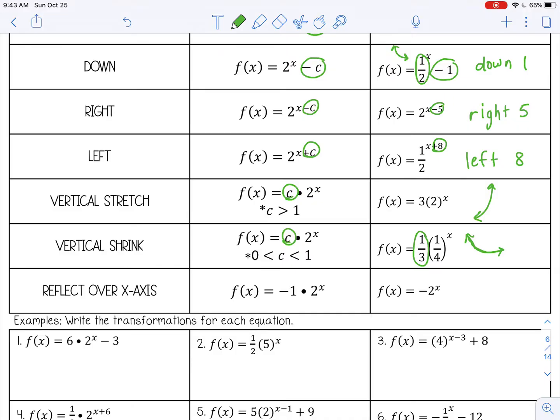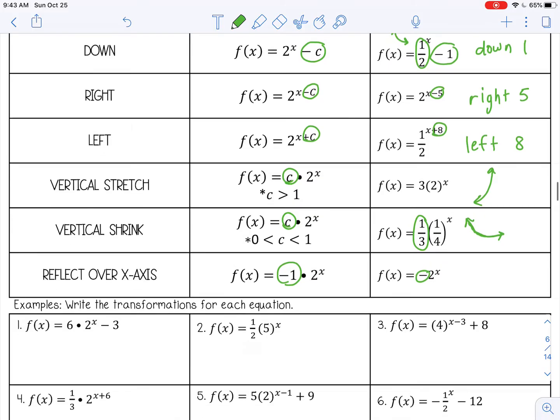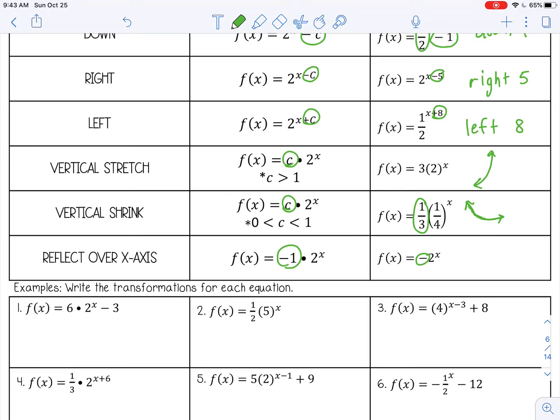And then reflect over the x-axis, you multiply by negative 1. So that's here, this negative 2. Now remember I said b has to be greater than 1, and my b still is greater than 1. This is just negative 1 times 2^x. And we have just simplified negative 1 times 2 is negative 2. So our b is still greater than 1. And this is going to flip it over the x-axis. So now it's going to be going down like that.